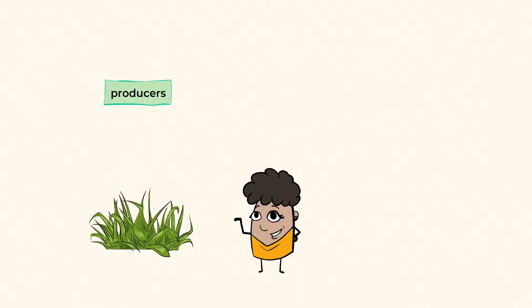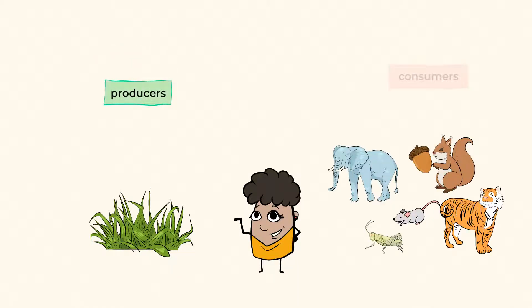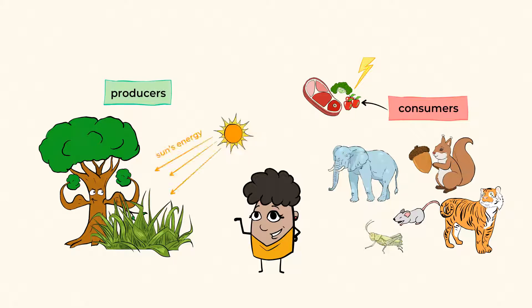If plants are called producers, then animals are called consumers because they eat or consume other things for energy. They don't have the superpower like plants to make their own food.